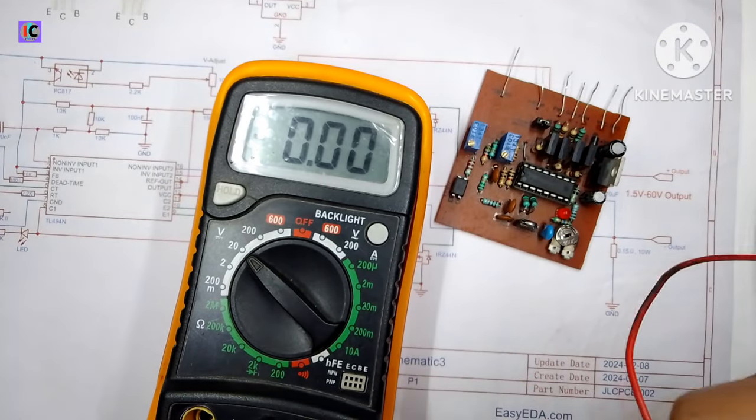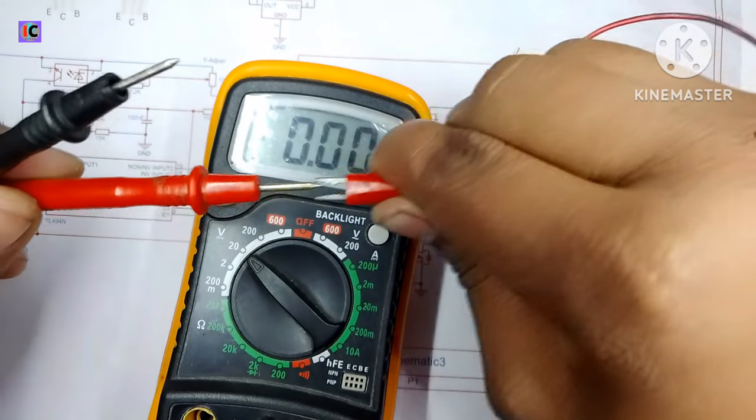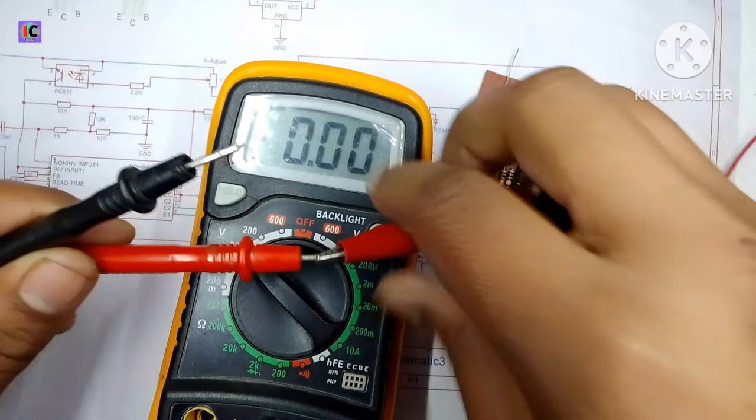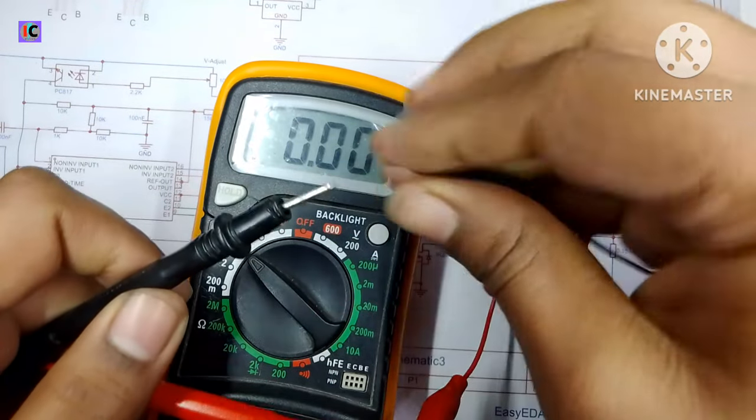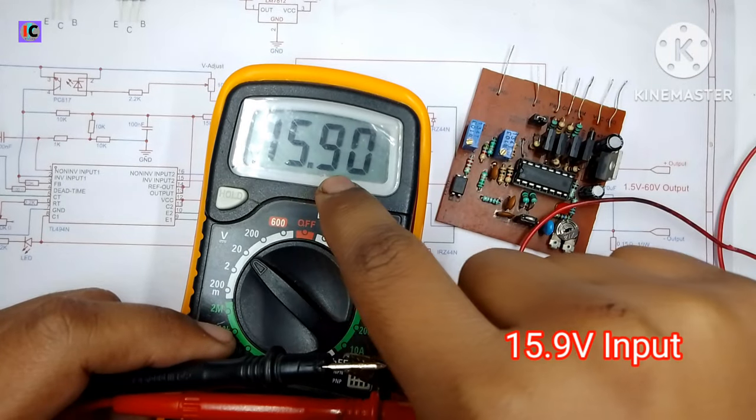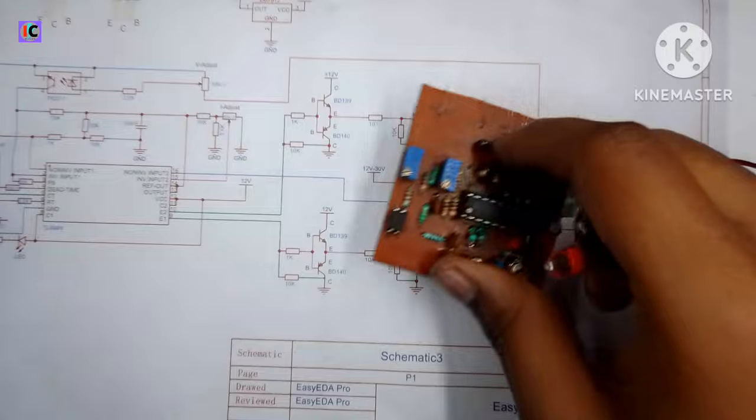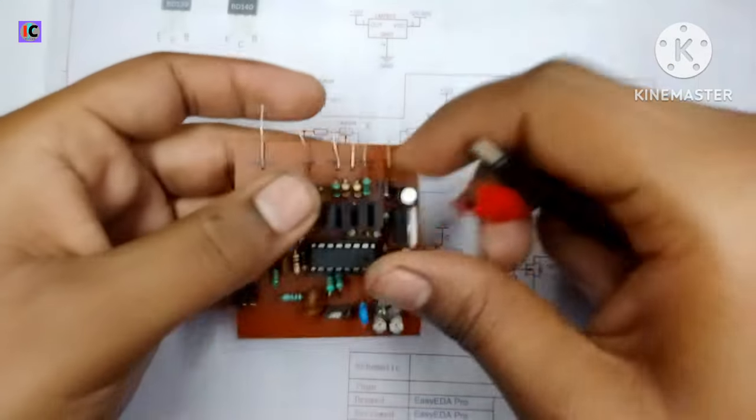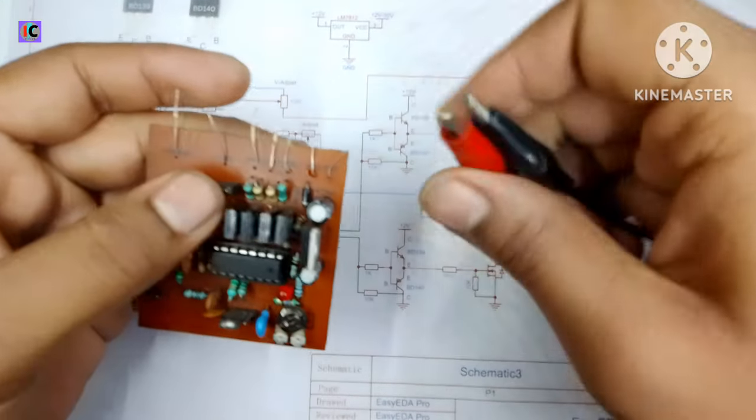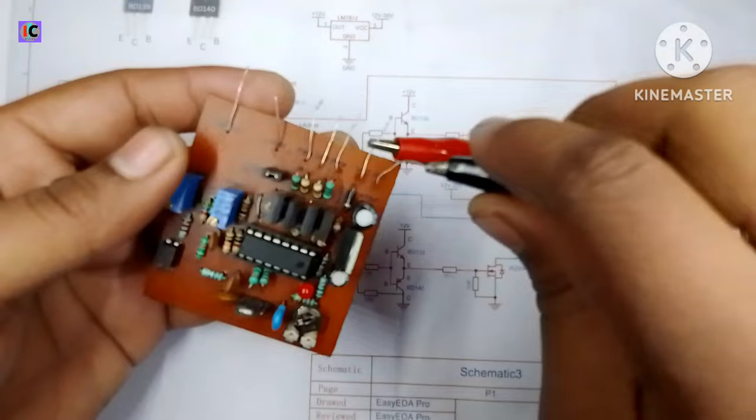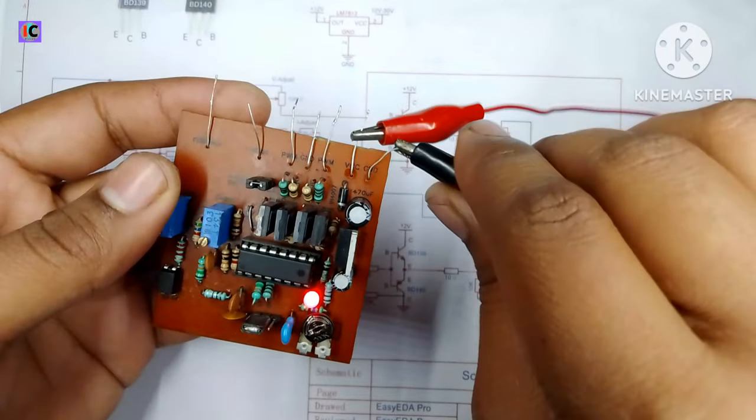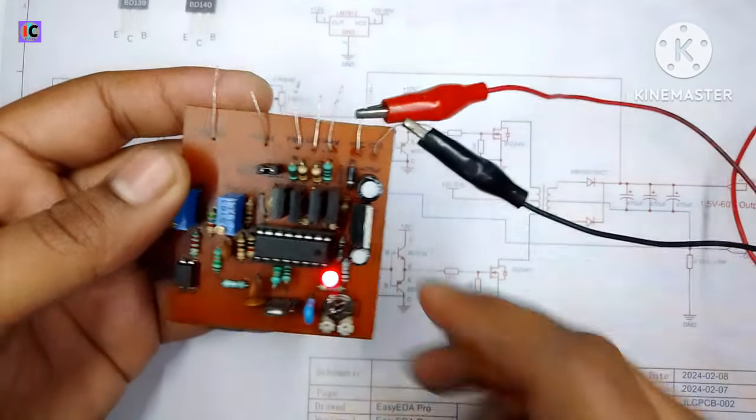Now I am testing the module with my power supply which has a voltage of around 15.9 or 16 volts. I'm powering the module with 16 volts. This is the ground pin and the red one is the positive pin. You can see the red LED on the module is indicating the power supply.